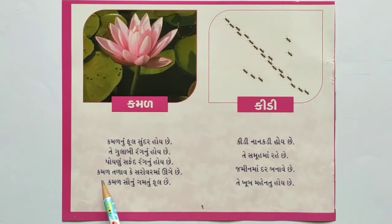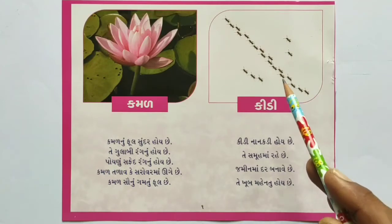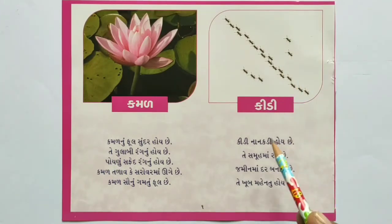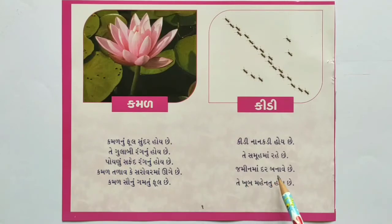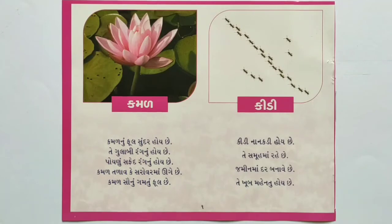કમળ - કમળ તળાવમાં ઉગે છે, કમળ શિવનું ગમતું ફૂલ છે. કીડી - નાણકડી હોય છે. આ કાડ/કાર્ડ ને વાંચો. કાર્ડ ને વાંચવા માટે વિડીઓ ને થોડી વાર માટે ઉભો રાખી દો.